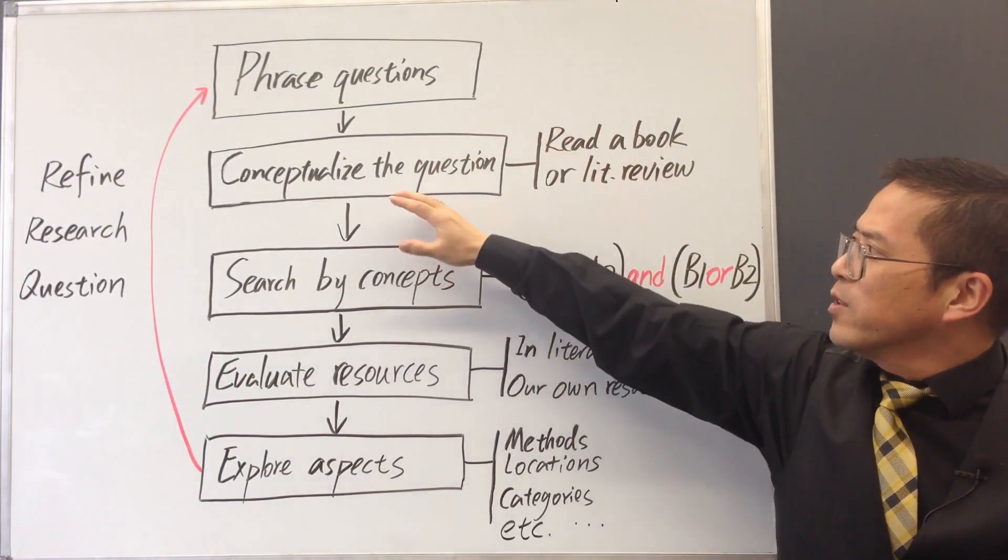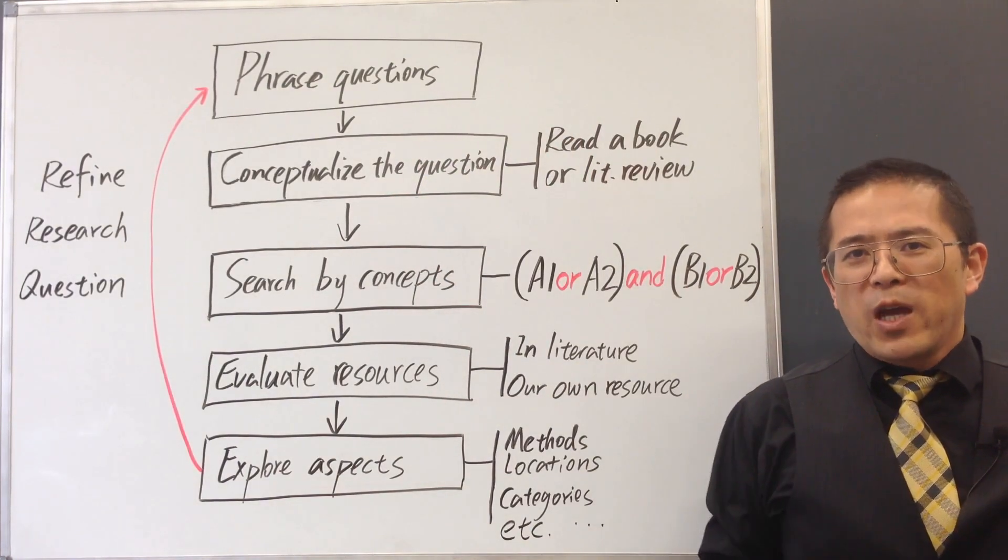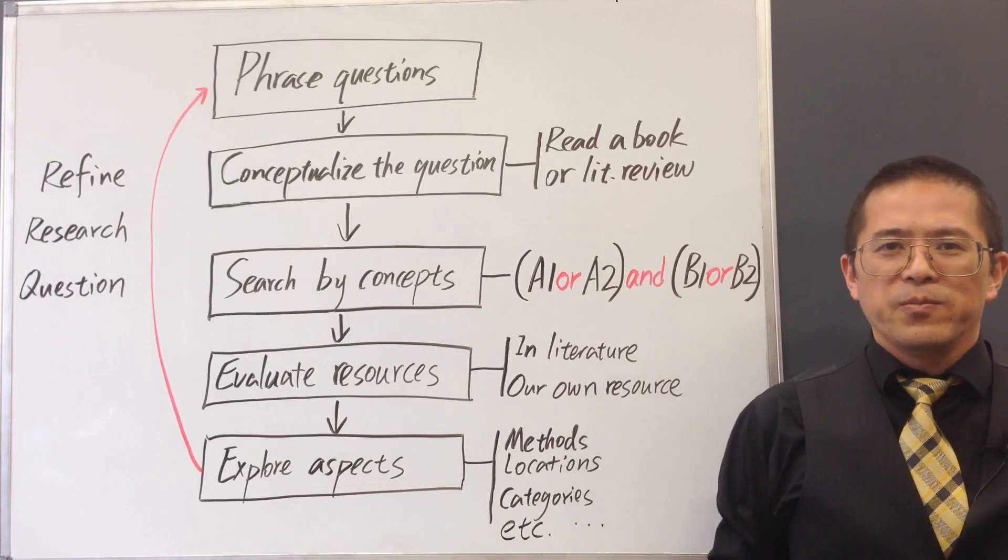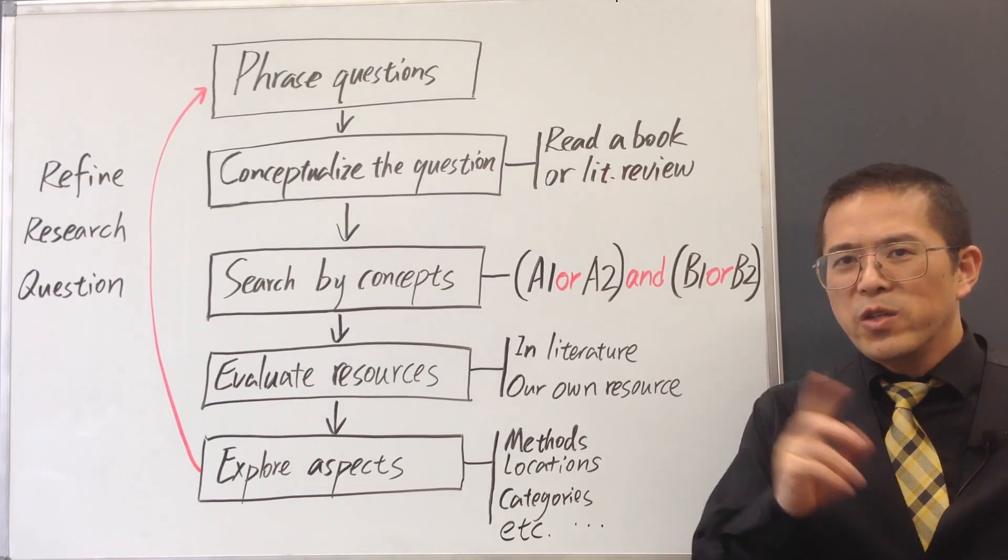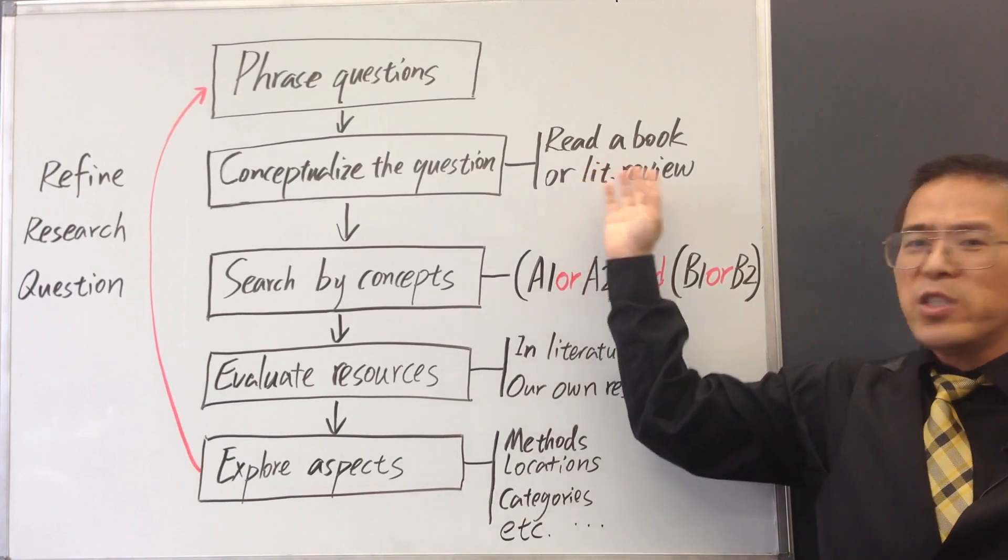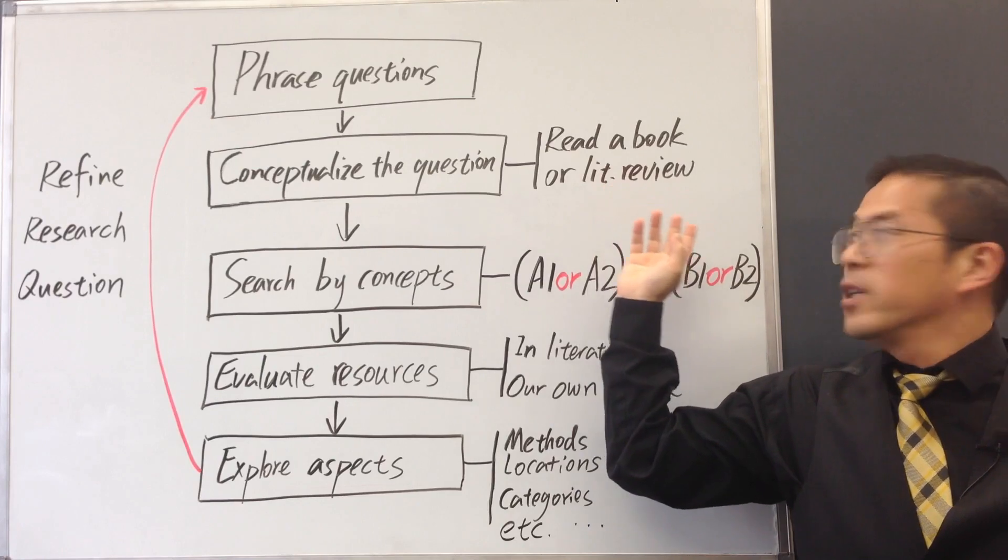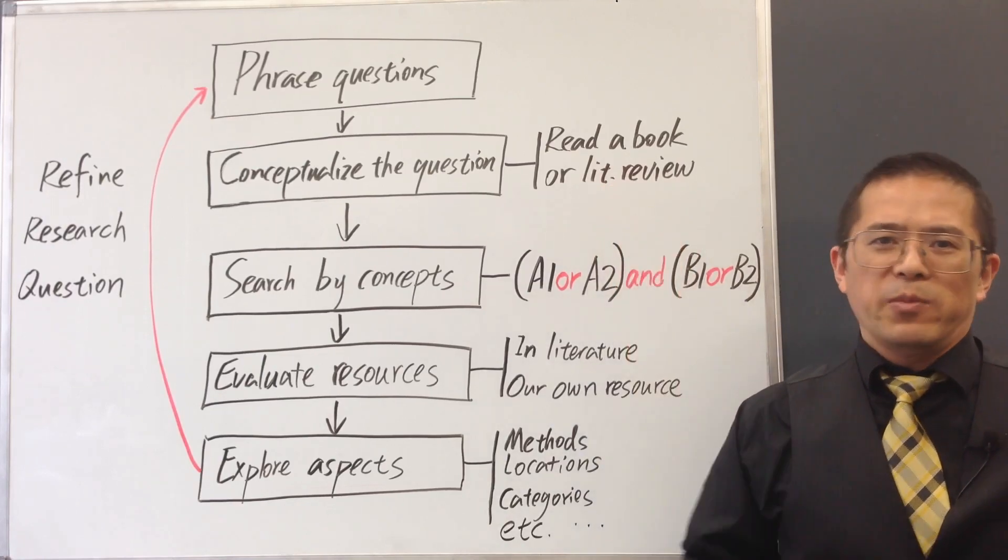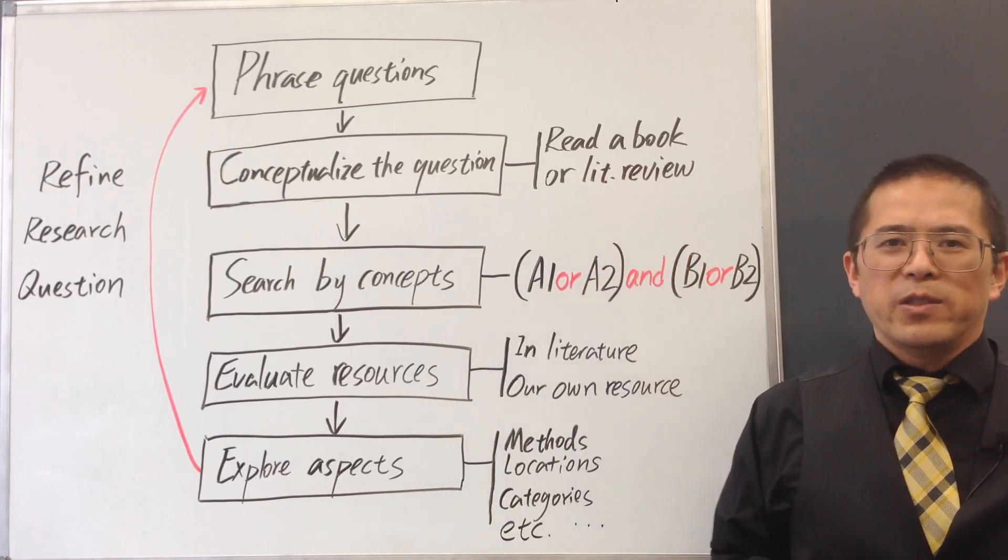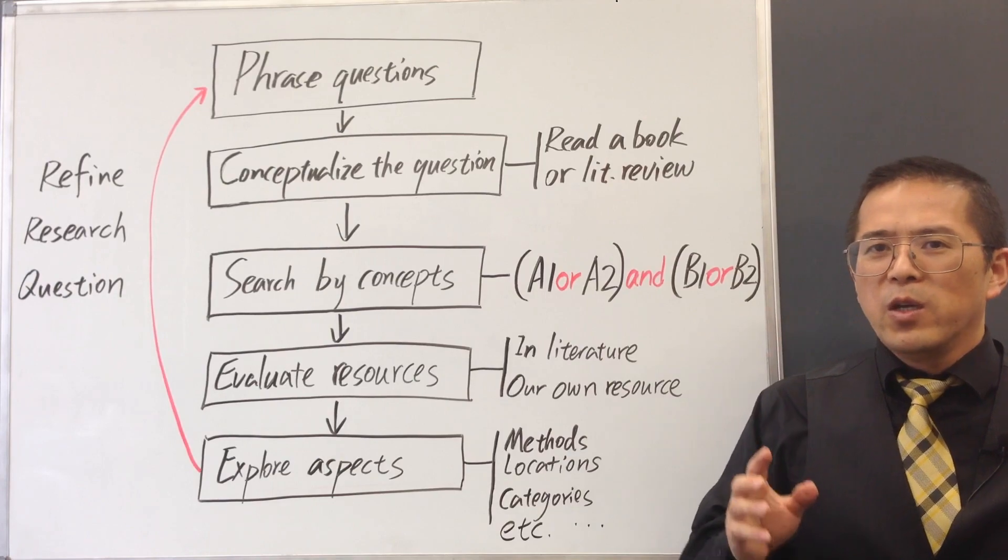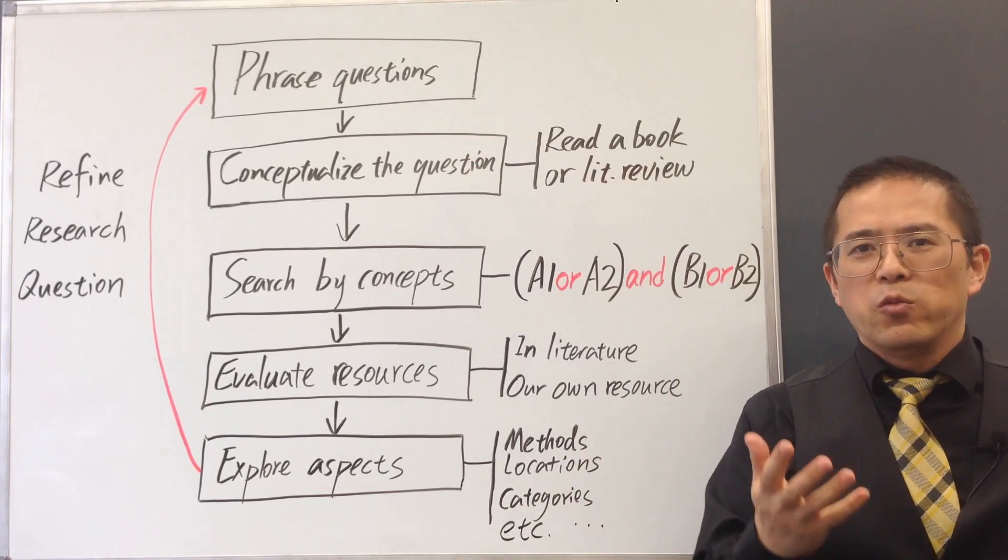Once we have our first version of research questions, the next step is to conceptualize these questions. We want to break down the questions into concepts and identify the key concepts in our topic. It may be a good idea to read a chapter in a specialized textbook, encyclopedia, or to read a literature review to understand these concepts. After we have done this, we may ask ourselves, are we still satisfied with the topic or the questions we formulated? If not, we can go back and revise them.